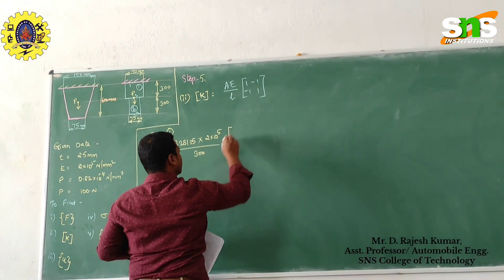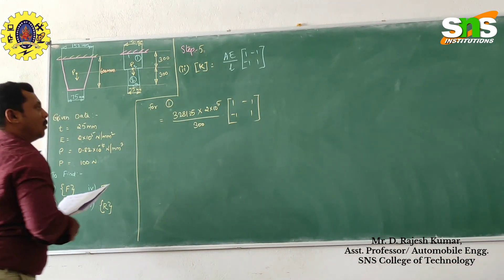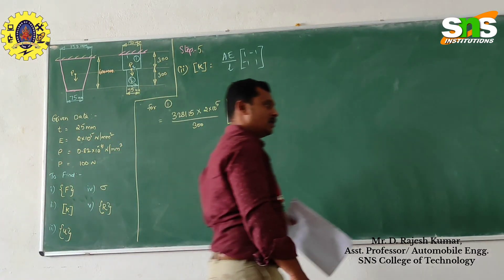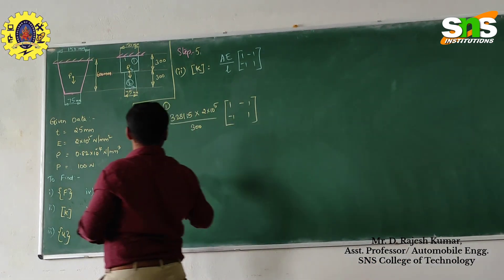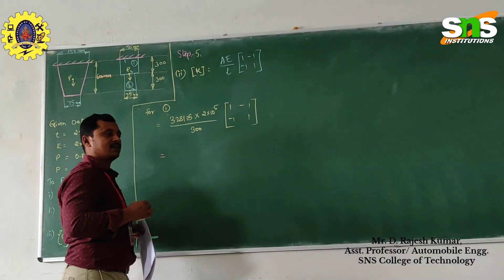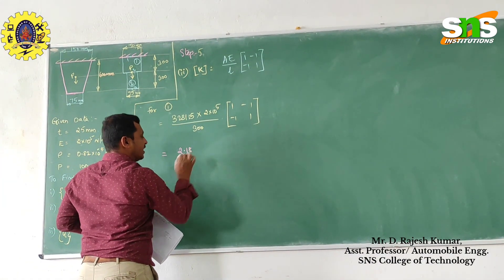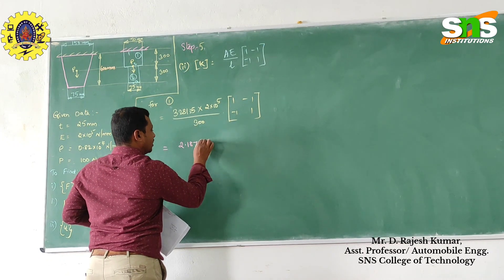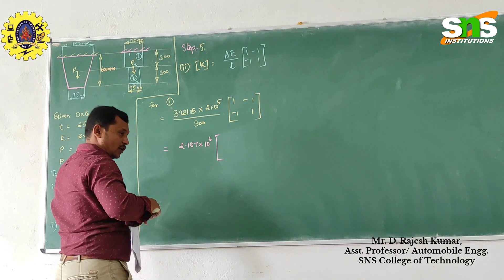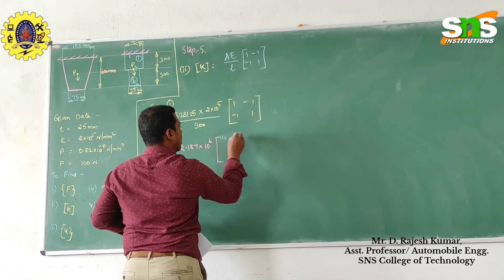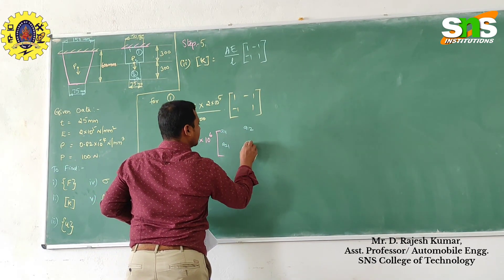The answer is 2.18. So if we substitute in the gather pattern we get 2.18. This gives us 2.18 into the matrix. Here you have to write it as A11, A12, A21, A22.